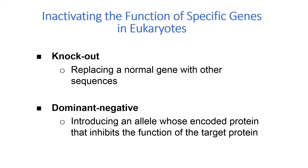Two basic approaches underlie these gene inactivation techniques. First, replacing a normal gene with other sequences, or knockout. And second, introducing an allele whose encoded protein inhibits the function of the target protein, also known as dominant negative.